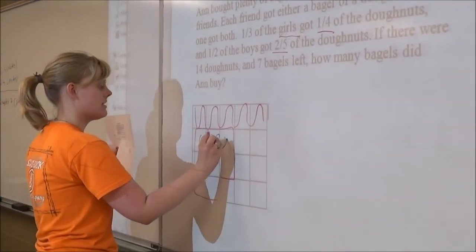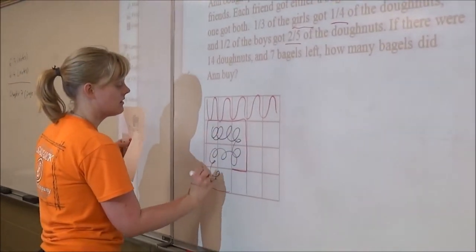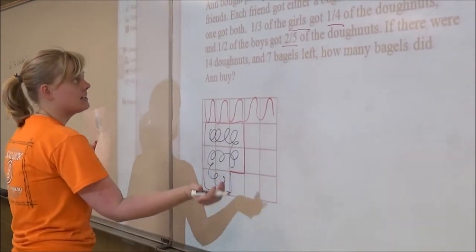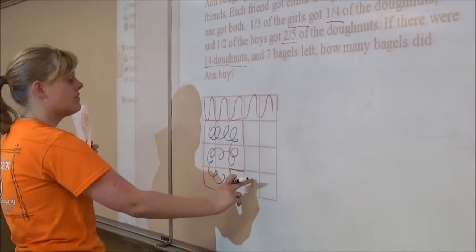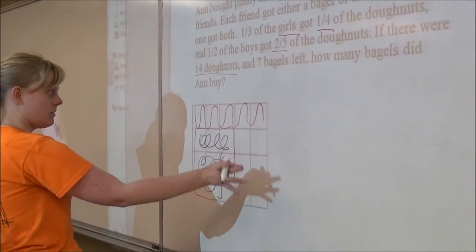So this is what the boys had. It said that there are 14 doughnuts left, and since there are 1, 2, 3, 4, 5, 6, 7 boxes that weren't eaten,